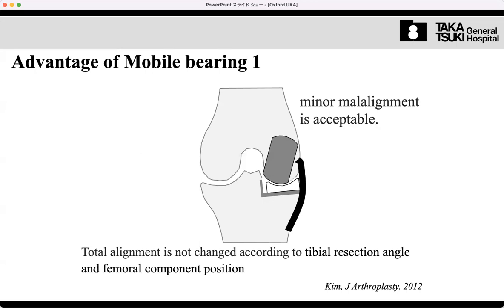In terms of contact area, minor malalignment can be accepted. But unlike mobile bearing, using fixed bearing, if we implant fixed bearing the alignment can cause point edge loading. For mobile bearing, alignment doesn't matter. We never care about alignment. But fixed bearing users care about total leg alignment.